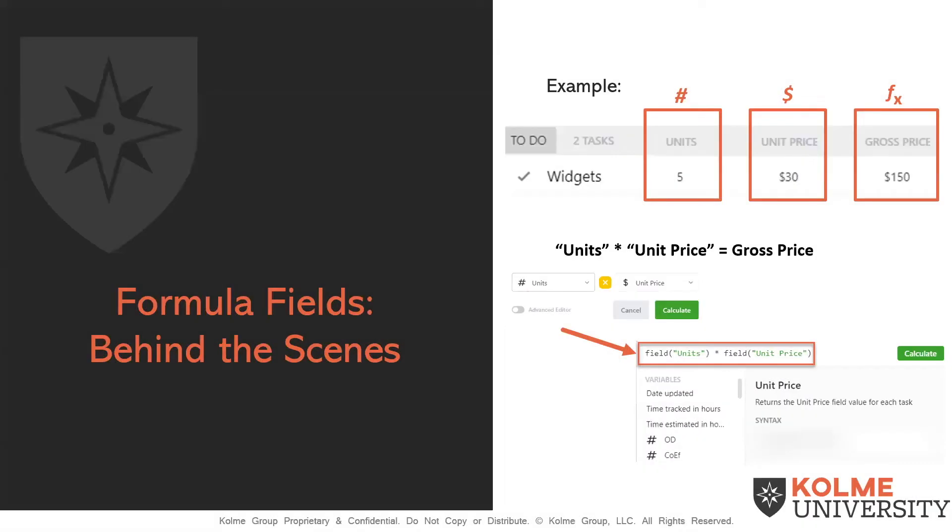No doubt by now you've seen the Formula Custom Field in ClickUp and what it does in terms of basic mathematics. If we see here, we have a units field, which is a numeric field, a unit price field, which is a monetary field, and then we created a formula custom field called gross price.